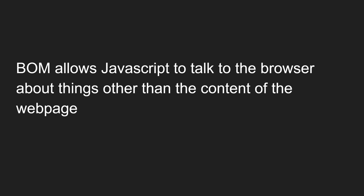The BOM — Browser Object Model — allows JavaScript to talk to the browser about things other than the content of the web page. If you want to access the content of the web page, we use the document. But the BOM allows JavaScript to talk to the browser, whether it's Chrome, Firefox, Edge, or anything else, about things other than page content — like the address bar, the browser operating system, and browser software. The content of the page comes under the DOM hierarchy.